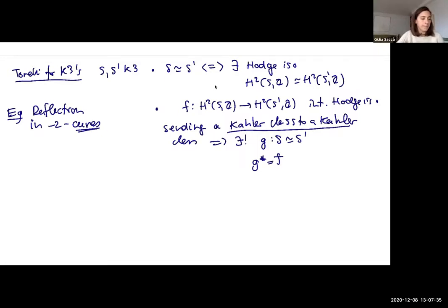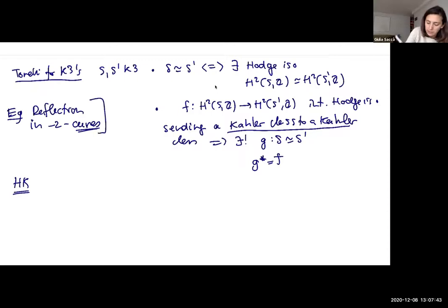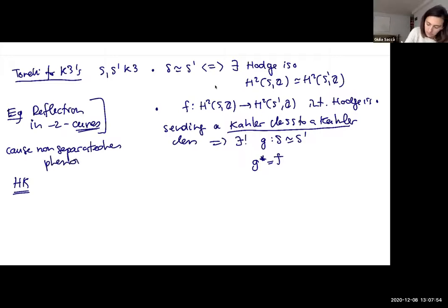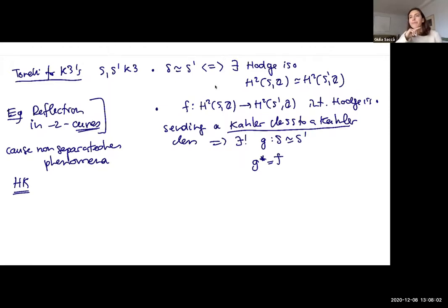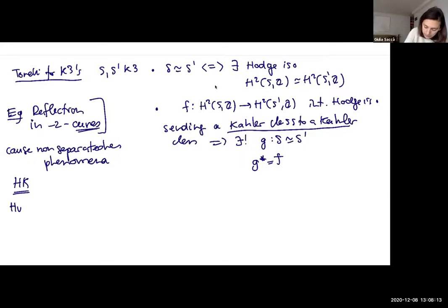An isomorphism that does not satisfy this condition about sending a Kähler class to a Kähler class includes reflections in the minus-two curves, where these minus-two curves are classes of irreducible minus-two curves. For hyperkähler manifolds, the situation is a little more complicated. These reflections in minus-two classes cause non-separatedness phenomena, but in fact even with this non-separatedness issue, the corresponding K3s are still isomorphic. For hyperkähler manifolds, this is not true anymore because of a very important theorem of Huybrechts.